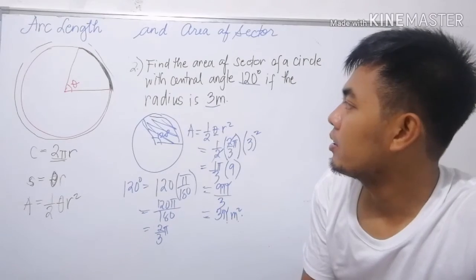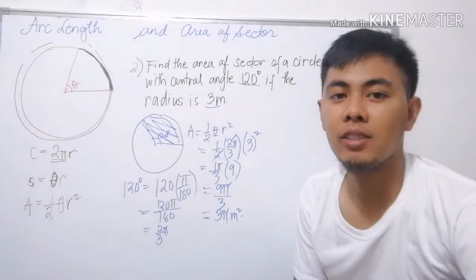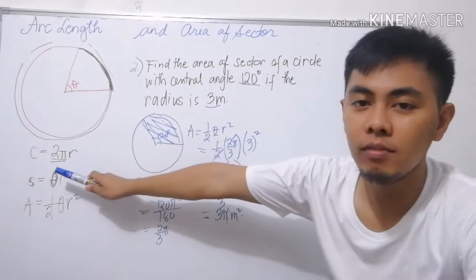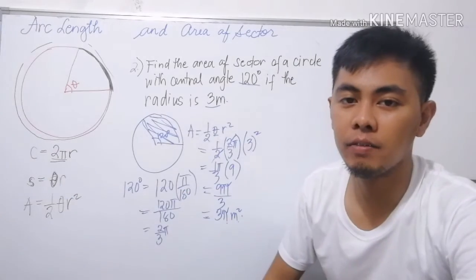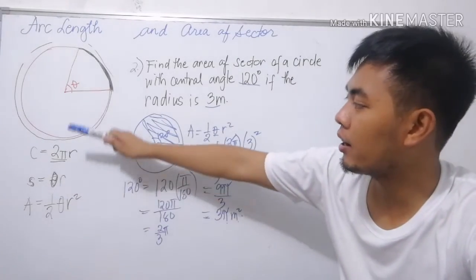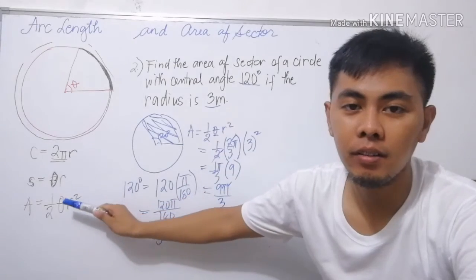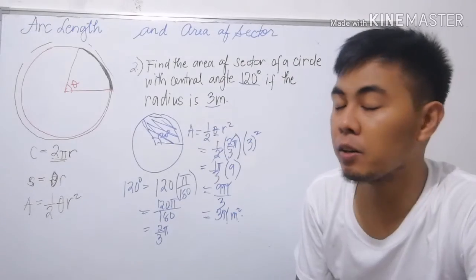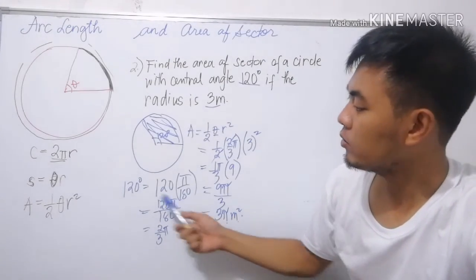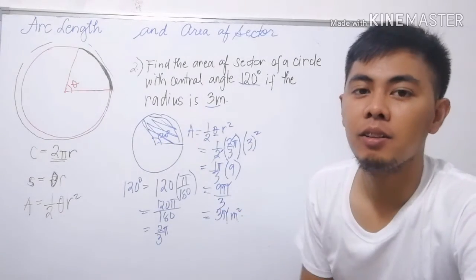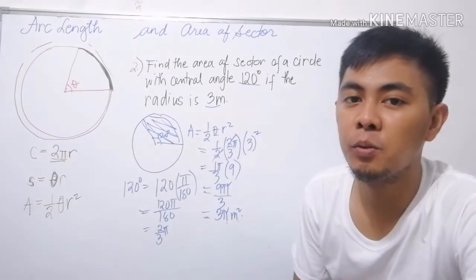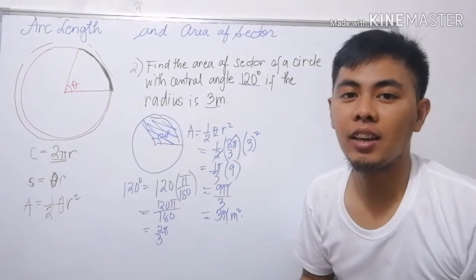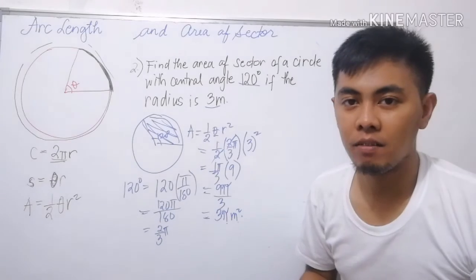So the area of this sector is 3π/2 m². So again, the formula for arc length is theta times R, and if you're going to find the area of the sector, it's 1/2 theta times R squared. And of course, do not forget to convert the degree measure into radians.